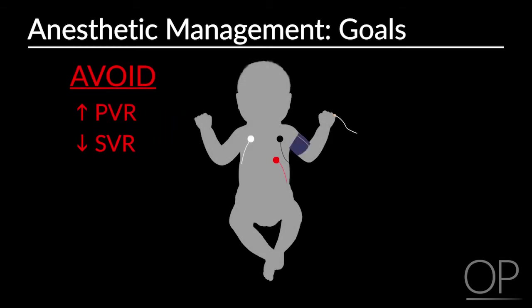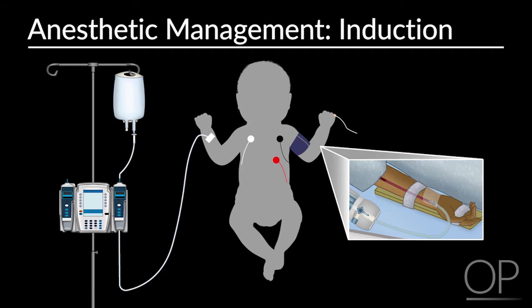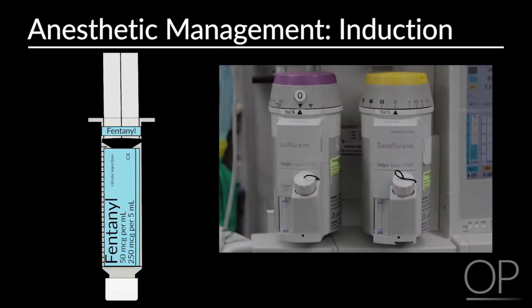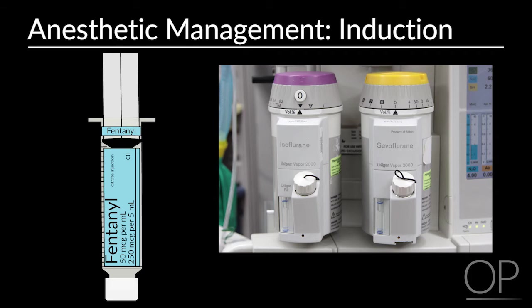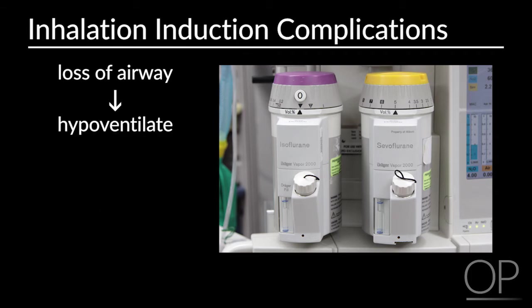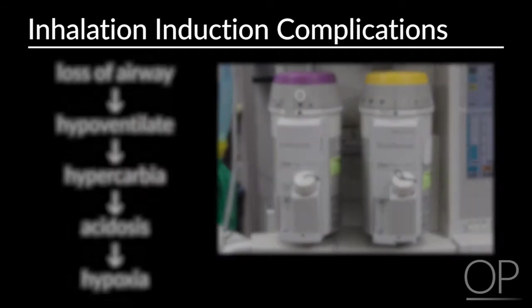Place standard ASA monitors before induction and determine if an arterial line is needed based on the case. For induction, maintain a dedicated IV if the patient is already on a pulmonary vasodilator infusion — stopping this even briefly can precipitate an acute pulmonary hypertensive crisis. An IV induction is preferred. Inhalational induction is possible with adequate ventricular function, but if the airway is lost, the patient will hypoventilate, become hypercarbic, leading to acidosis and hypoxia, causing an acute pulmonary hypertensive crisis.